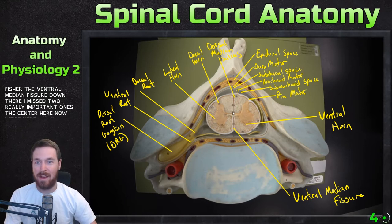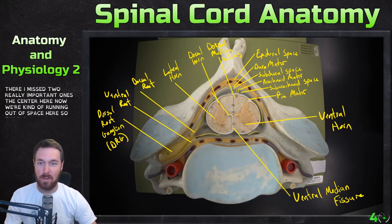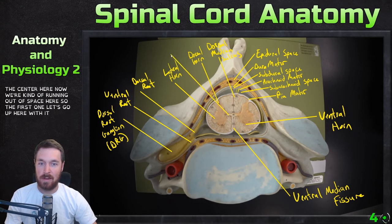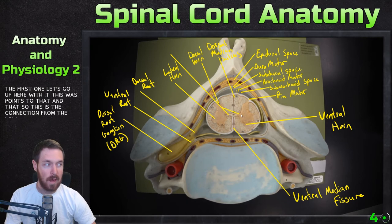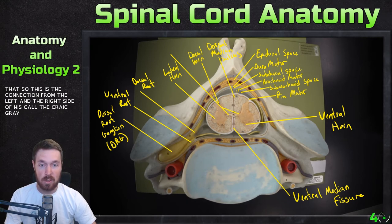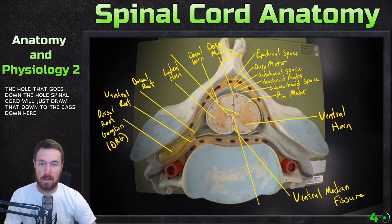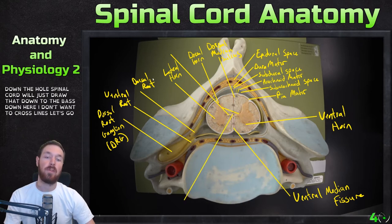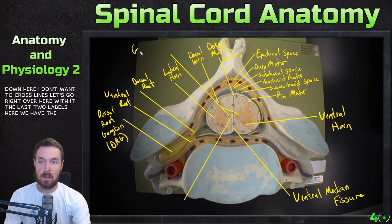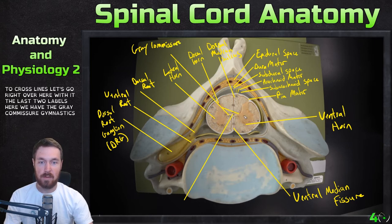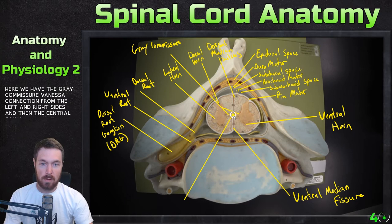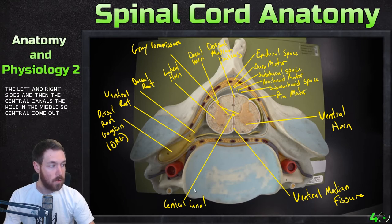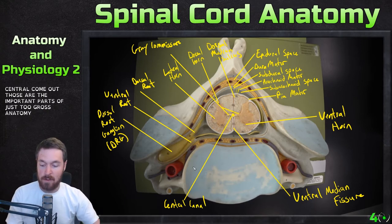Two really important ones in the center here: the first is the connection from the left and right side — this is called the gray commissure. And then in the middle, we have the hole that goes down the whole spinal cord — the central canal. So those are the important parts of just the gross anatomy of the spinal cord.